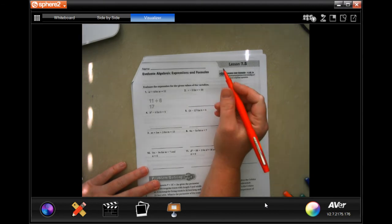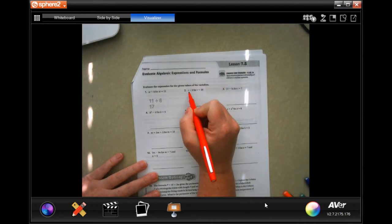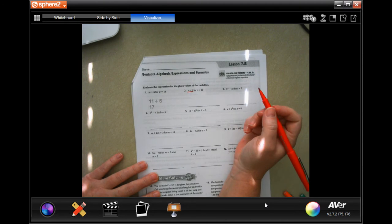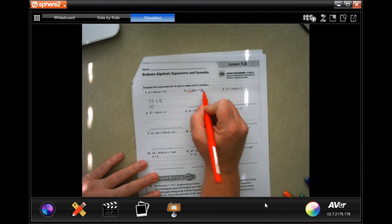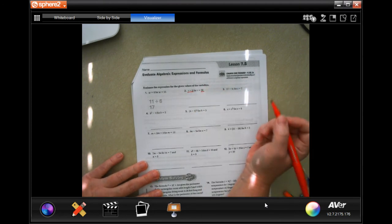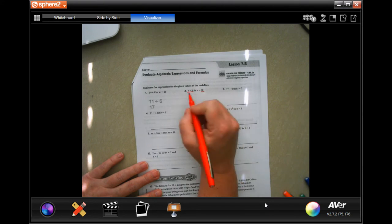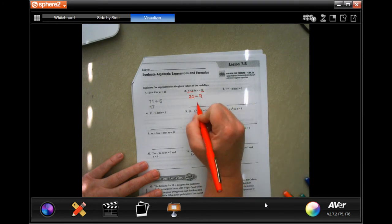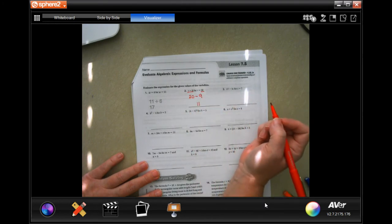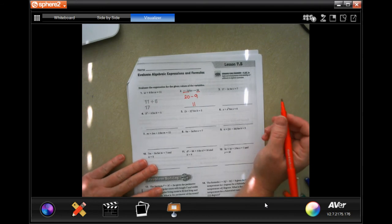This one is actually going to be super easy for you guys because it gives you a weird expression, a weird math problem, but then it gives you what the weird part is. This one says that R is equal to 20, so I'm just going to rewrite the problem as 20, and then it says minus 9. Well, I know that's 11. Super easy, guys. Don't make it harder than it's got to be.